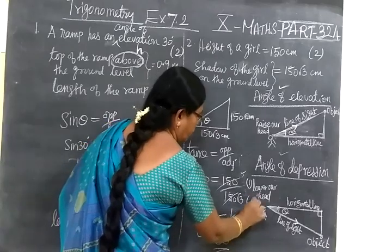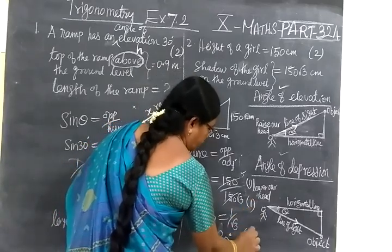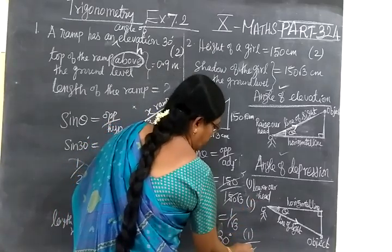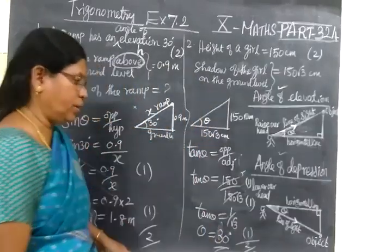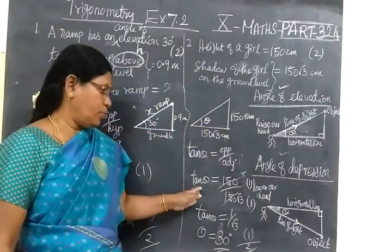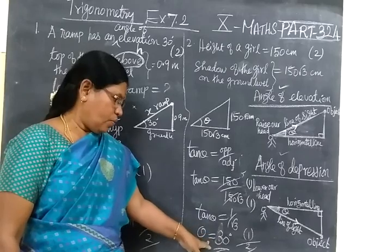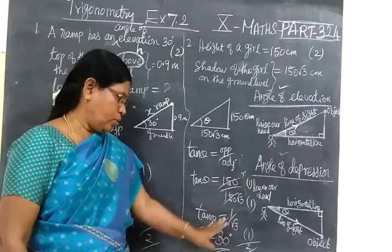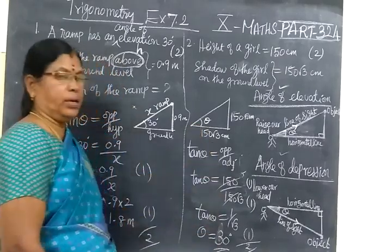So for this, 1 mark, and for the answer, 1 mark. So totally, you have to say 2 mark question. Usually for substitution, 1 mark. Then for final answer, 1 mark. Totally 2 marks. No mark for the diagram.